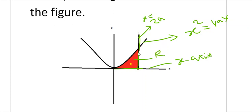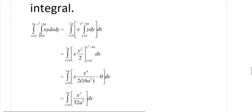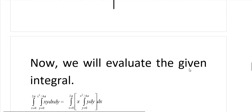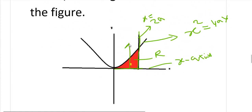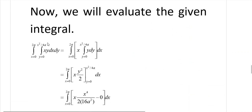Now we will evaluate the integral over this region. The given integral is the double integral of xy dx dy. First we will find the limits for y. Along the y-axis, the lower curve is the x-axis, meaning y equals 0, and the upper boundary is the parabola, giving y equals x squared by 4a. So y varies from 0 to x squared by 4a.